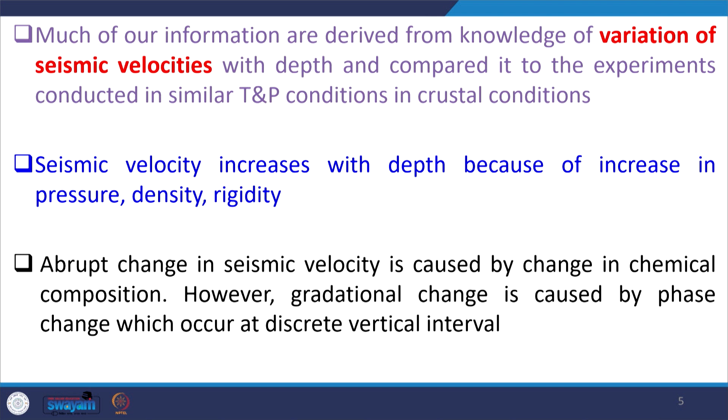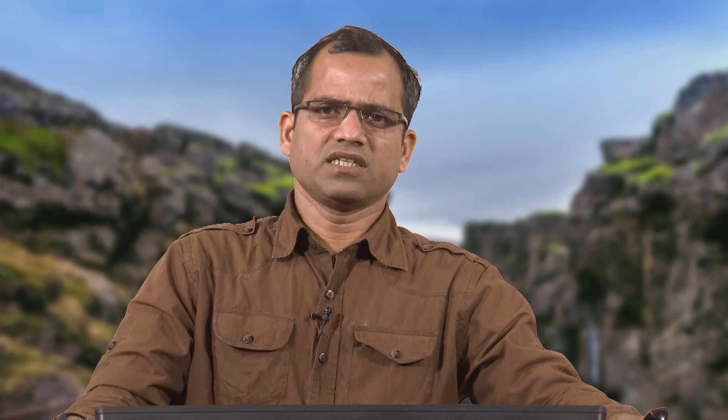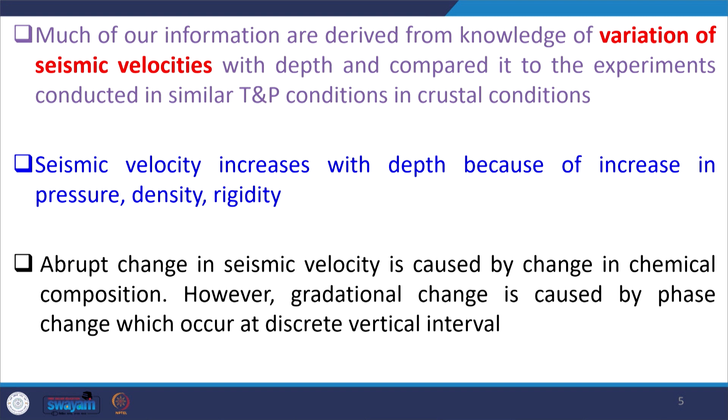Much of our information is derived from knowledge of variation in seismic velocities with depth, compared to experiments conducted in similar pressure and temperature conditions. We have seismic data and we do laboratory experiments at similar pressure-temperature conditions, observing changes in rock types with changing temperature and pressure. Seismic velocity increases with depth because pressure, density, and rigidity all increase as you go deeper. Abrupt changes in seismic velocity are caused by changes in chemical composition.